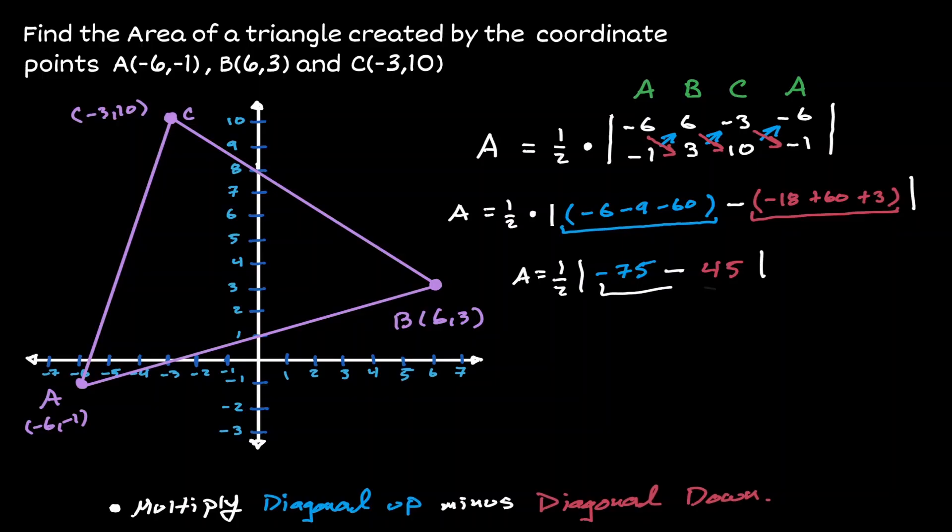Now if we combine the numbers inside the absolute value, we're going to get -120. The absolute value is always positive, so we're going to get positive 120. And 120 times 1 half is 60.